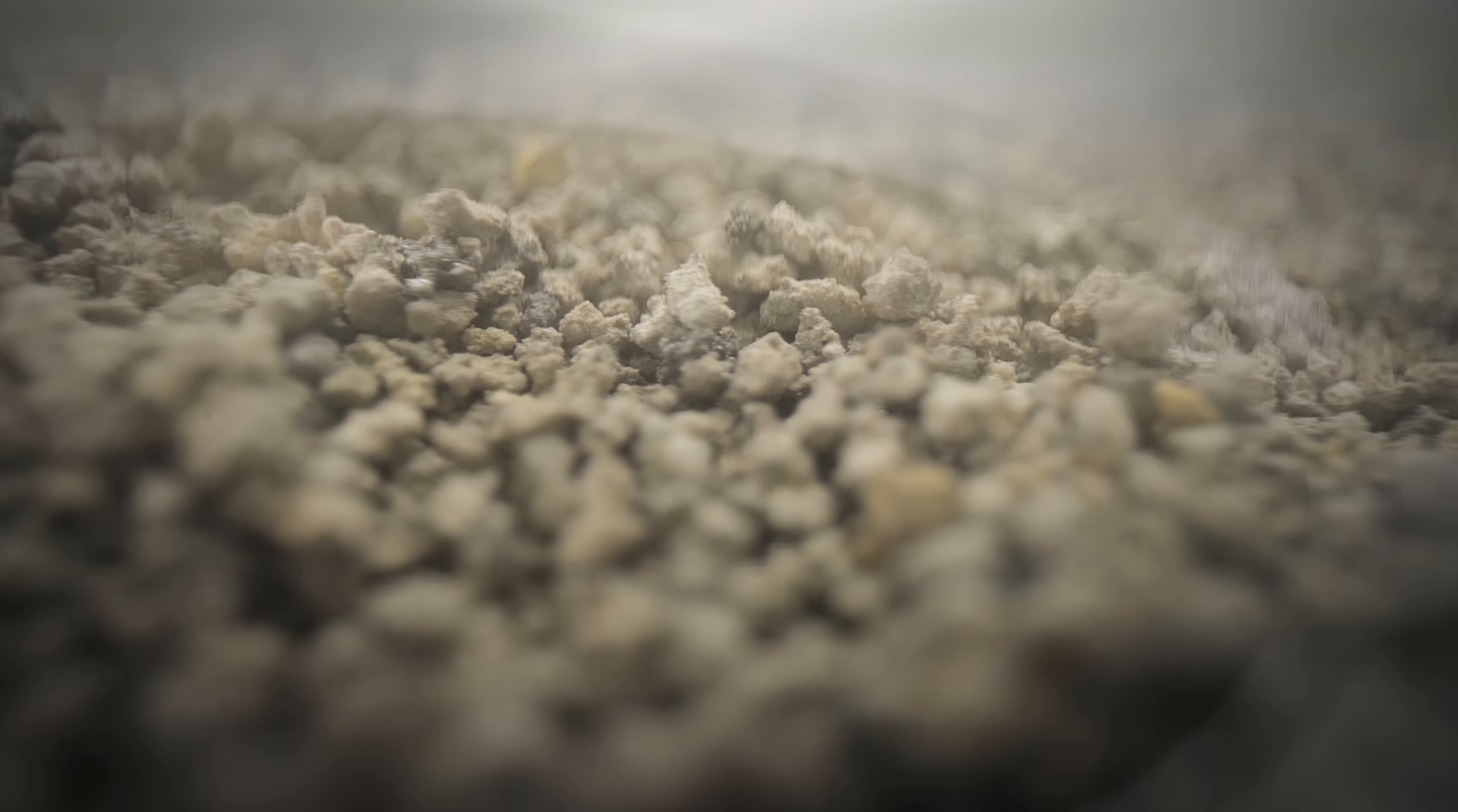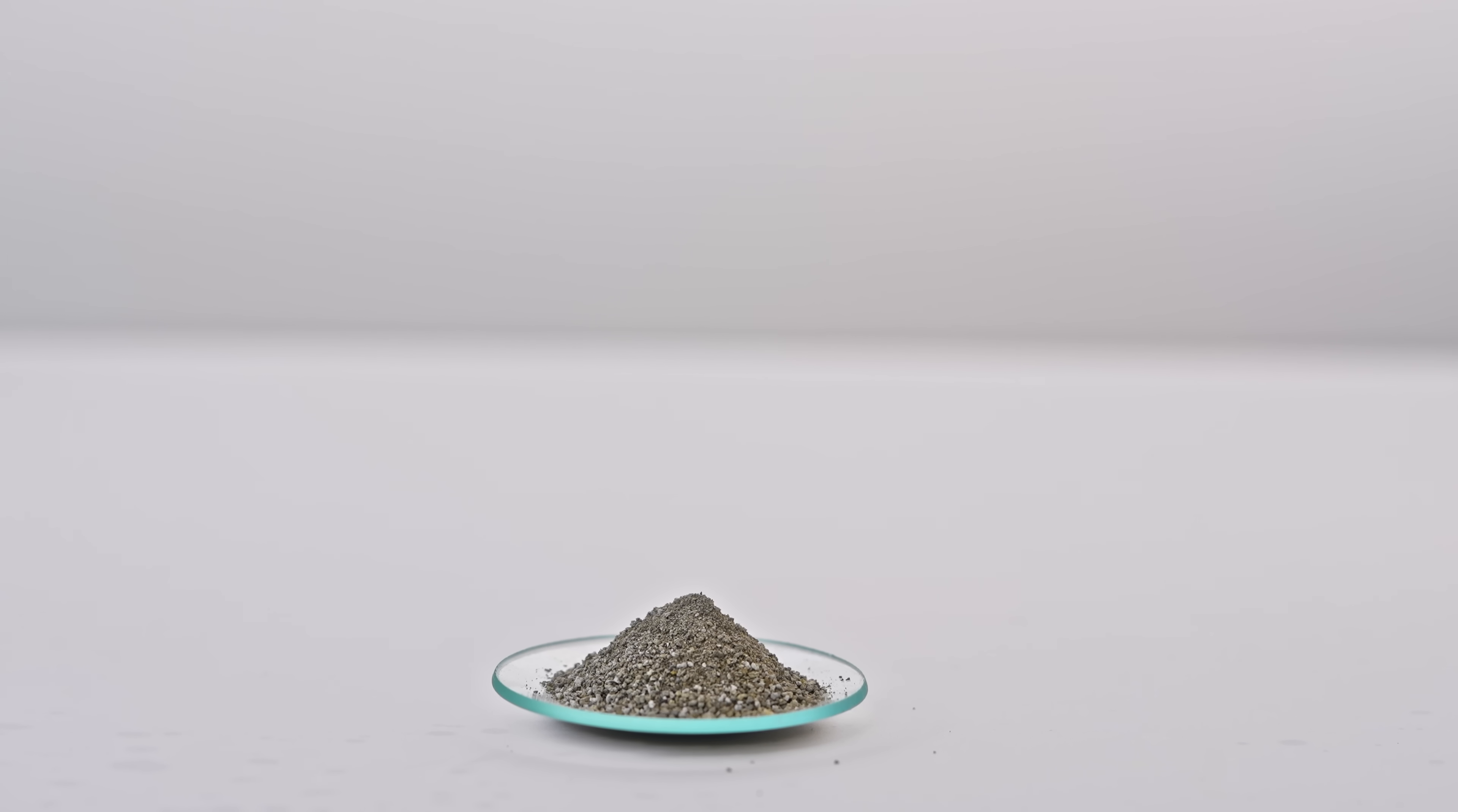This can be detected by bringing a piece of paper soaked in phenolphthalein near the powder. The paper quickly turns a crimson color.